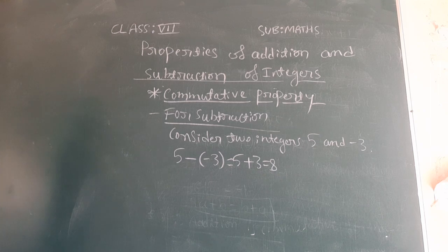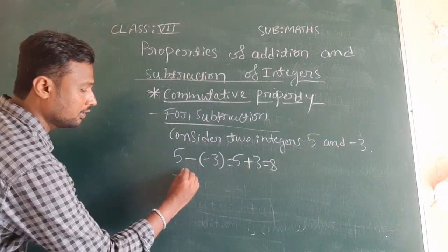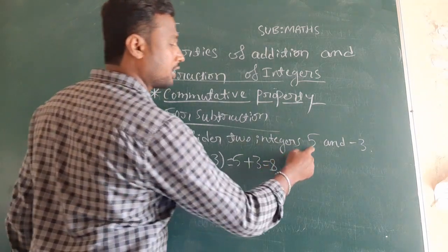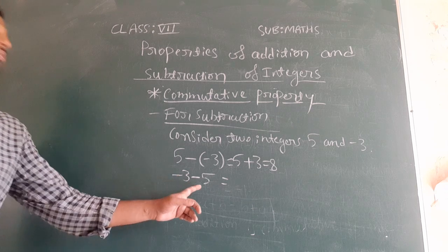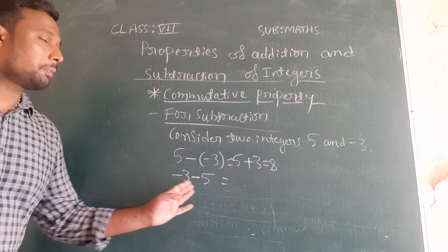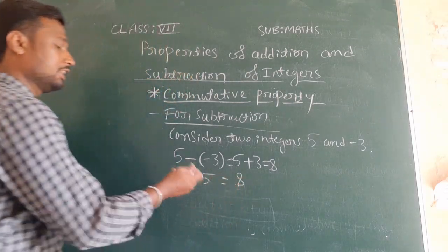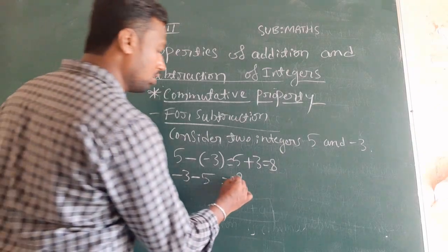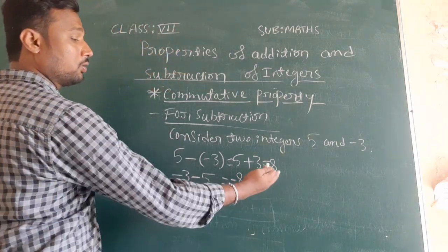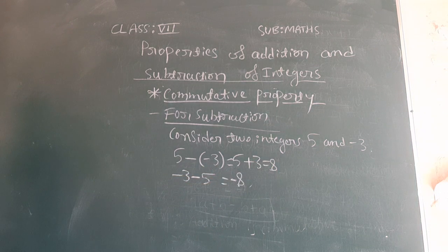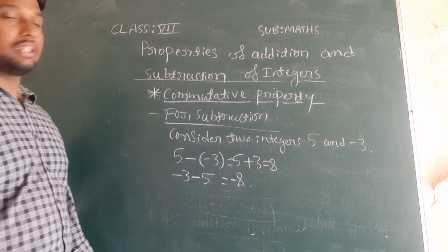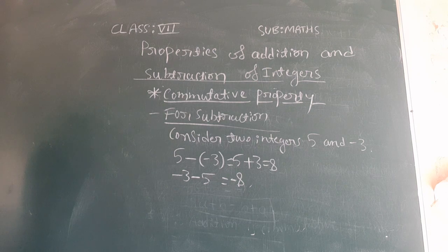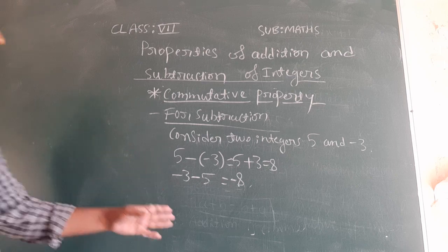Now we interchange these two values and check. We write b value first, that is minus 3, and subtract 5. So minus 3 minus 5: minus into minus is plus, so we have to add. Three plus five equals 8, and therefore minus 8. You can see: here we got plus 8, but here we are getting minus 8. These two answers are different. Therefore we say that subtraction is not commutative for integers.